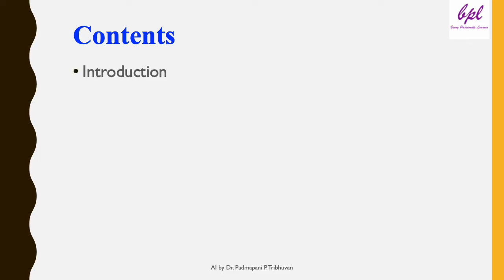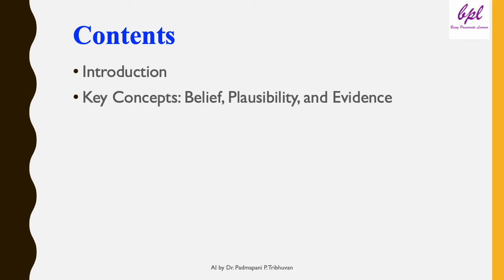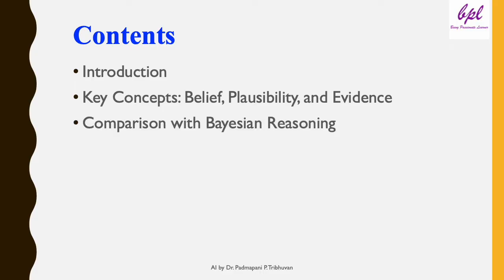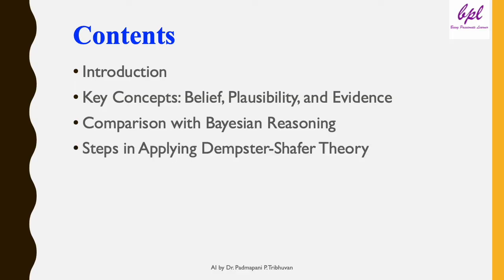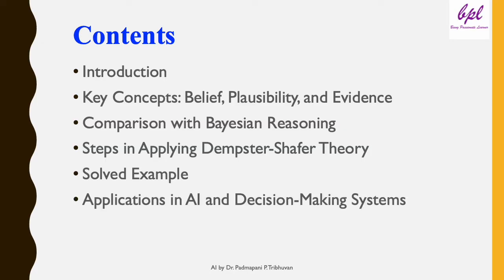Here is what we are going to cover in this video. First we will start with a quick introduction to the need for reasoning frameworks like Dempster-Shafer theory, that is DST. Then we will explore the key concepts: belief, possibility and evidence. Then we will compare Bayesian reasoning and DST. After that I will walk you through steps to apply DST and demonstrate it with a solved example. Then we will discuss real-world applications of DST and lastly the advantages and challenges of DST. So if you are ready to master the art of handling uncertainty, let's get started.